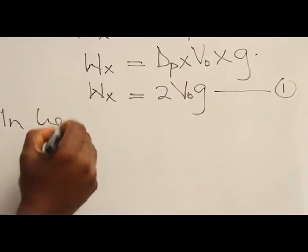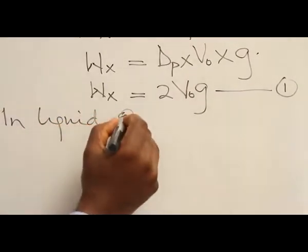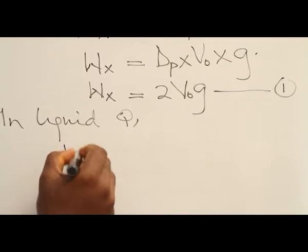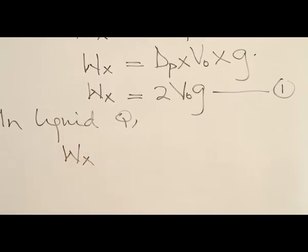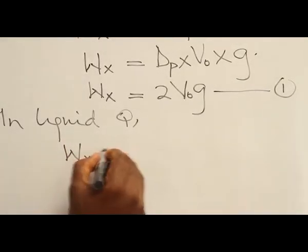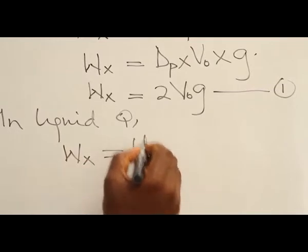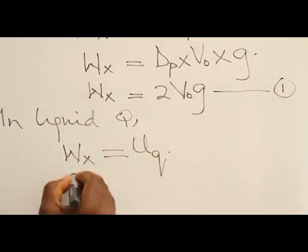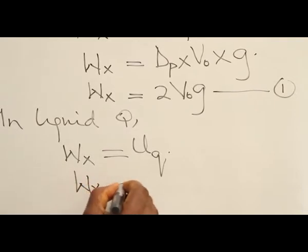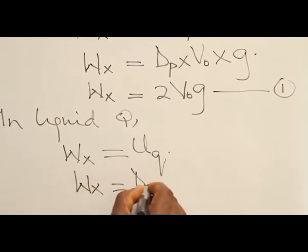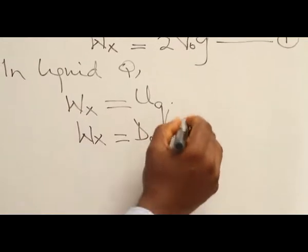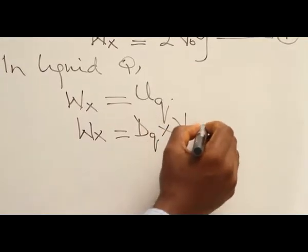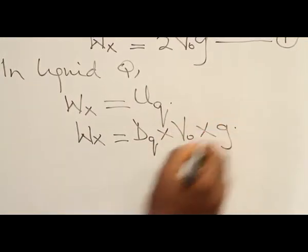In liquid Q, weight of X, applying again the principle of flotation, equals the upthrust of the object in the liquid called Q. So, the weight of X will give me density of the liquid times volume of the object times acceleration due to gravity.